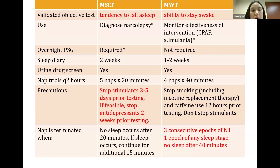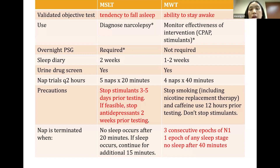For MSLT, a nap is terminated when no sleep occurs after 20 minutes; if sleep occurs, we continue for an additional 15 minutes to look for a SOREMP — a REM stage within 15 minutes of sleep onset. For MWT, a nap is terminated when there are three consecutive epochs of N1 sleep, one epoch of any other sleep stage, or no sleep after 40 minutes.